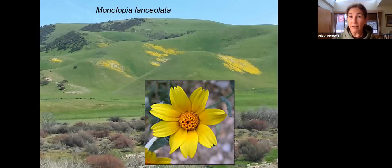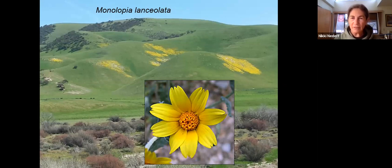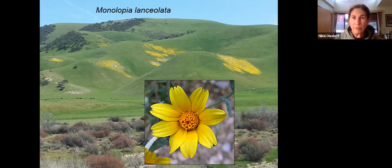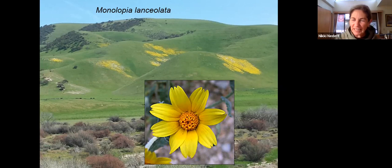Goldfields look a lot like Monolopia, which also makes beautiful yellow blankets on the hillsides. To really check the difference you have to get up close. To my eye there's a very subtle yellow tone change — Monolopia is a little brighter yellow. And if you look at the ray florets, it has these three little toothed notches. You don't see that unless you get really close and take a very long look.